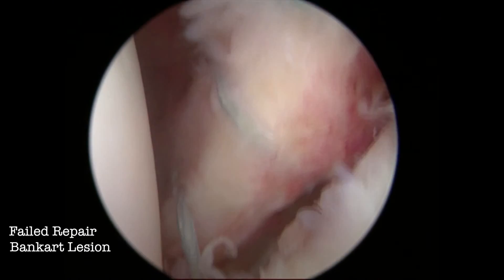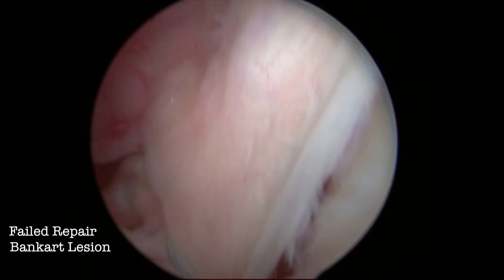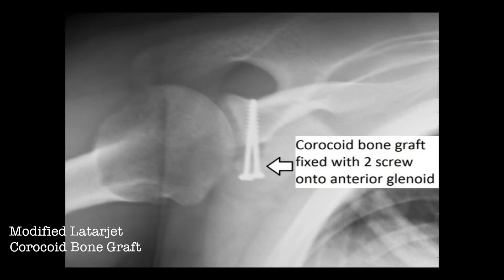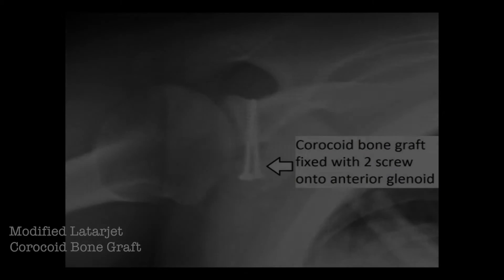If there is significant bone loss, a modified Latarjet is performed, where the coracoid process and its attachments are grafted and anchored to the inferior glenoid rim. This deepens the glenoid cavity and creates a tenodesis sling to prevent recurrent dislocation. Modified Latarjet repairs are stronger but may have more complications than Bankart repairs.